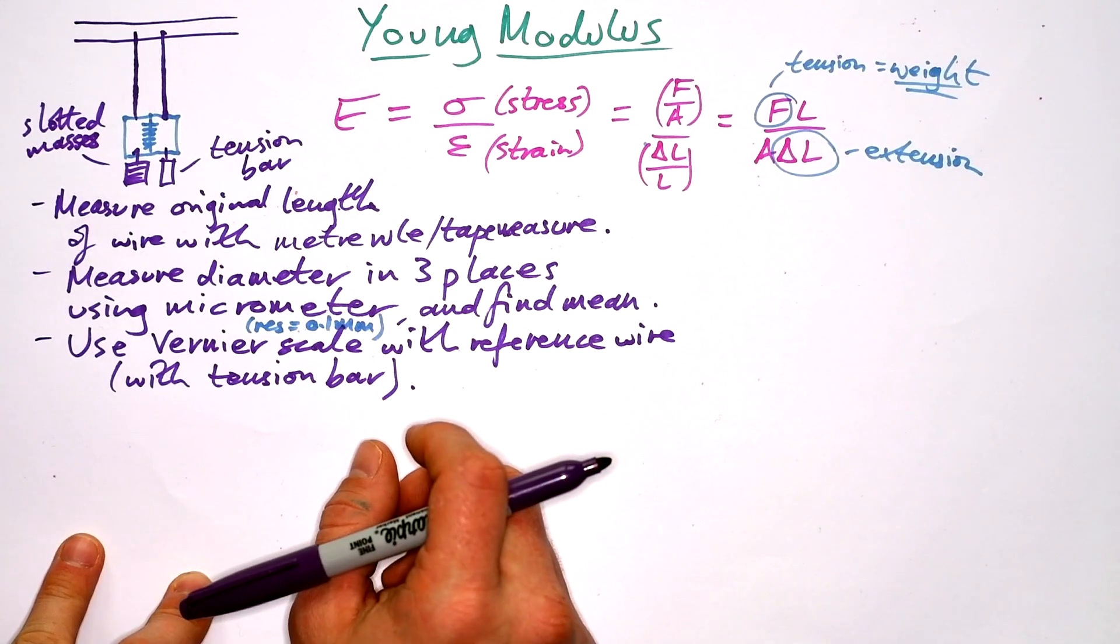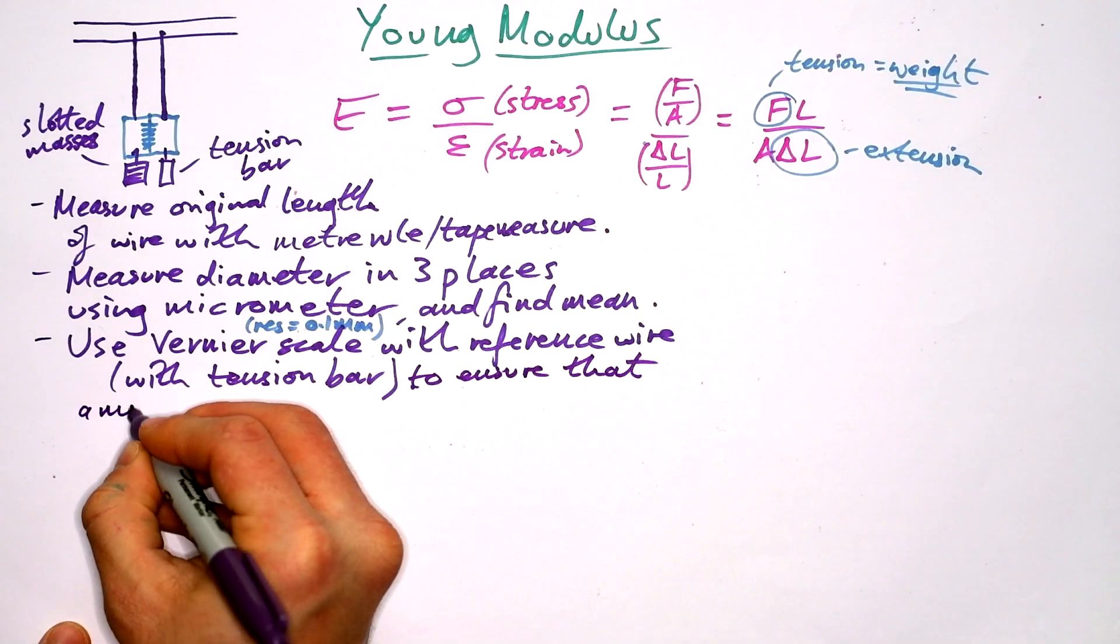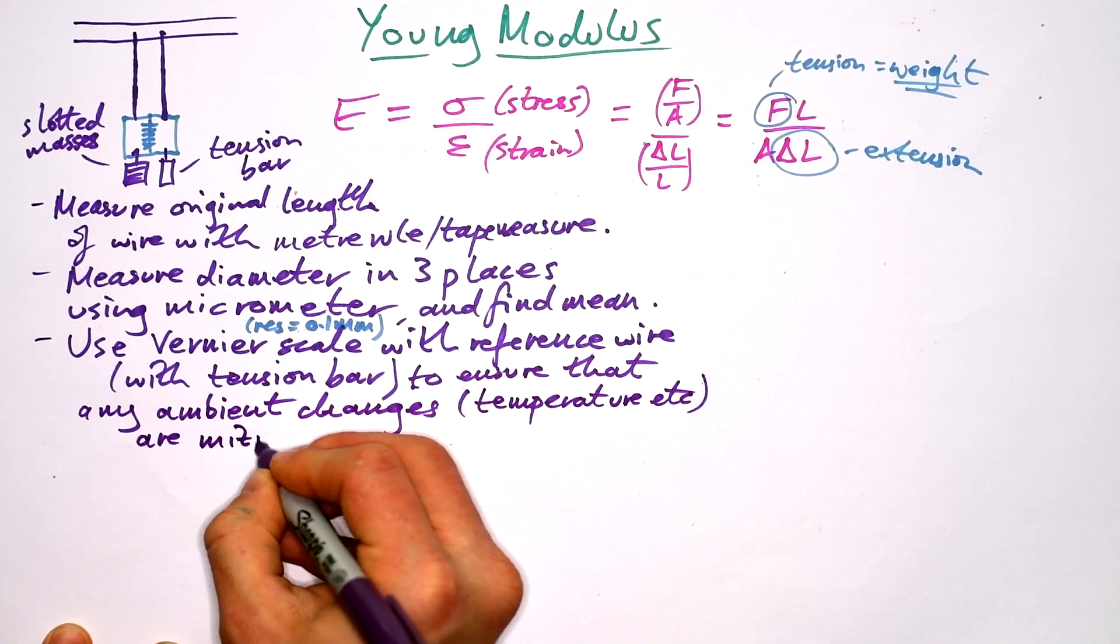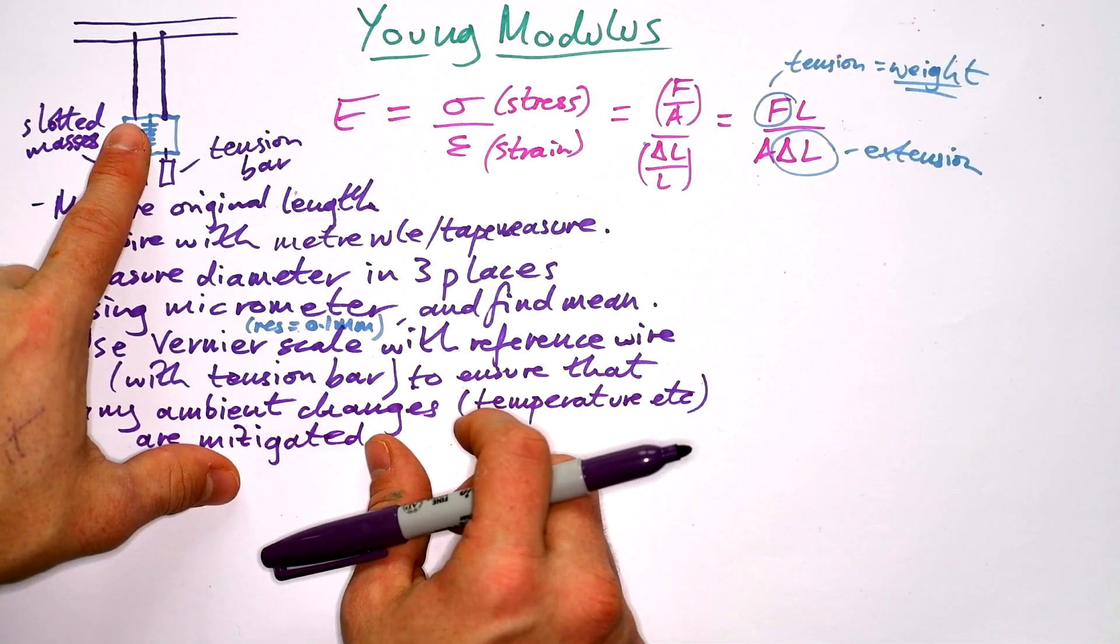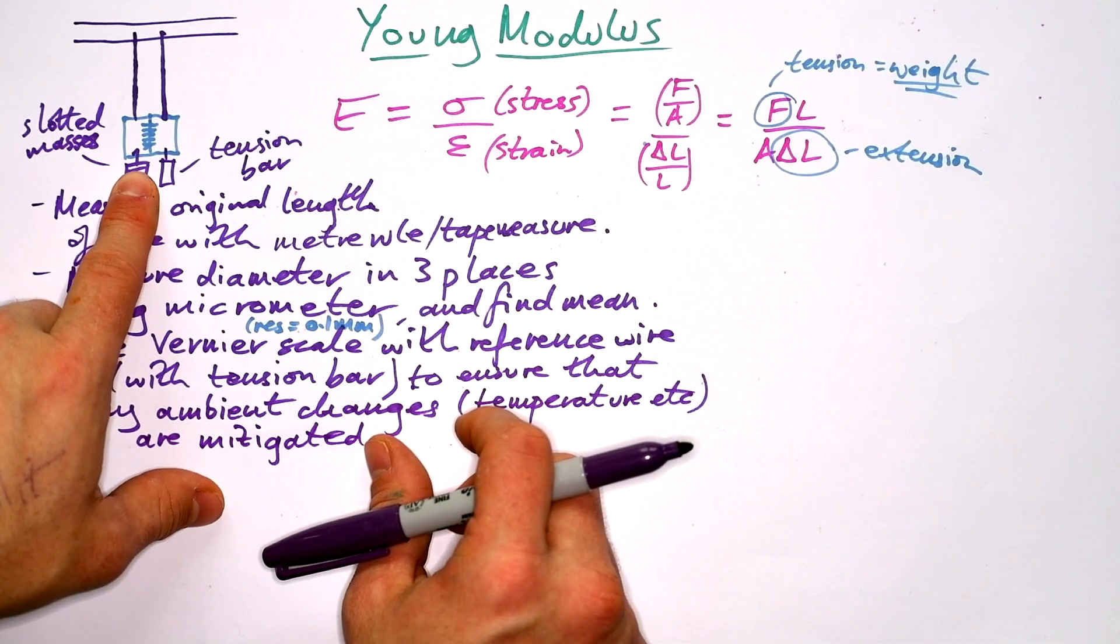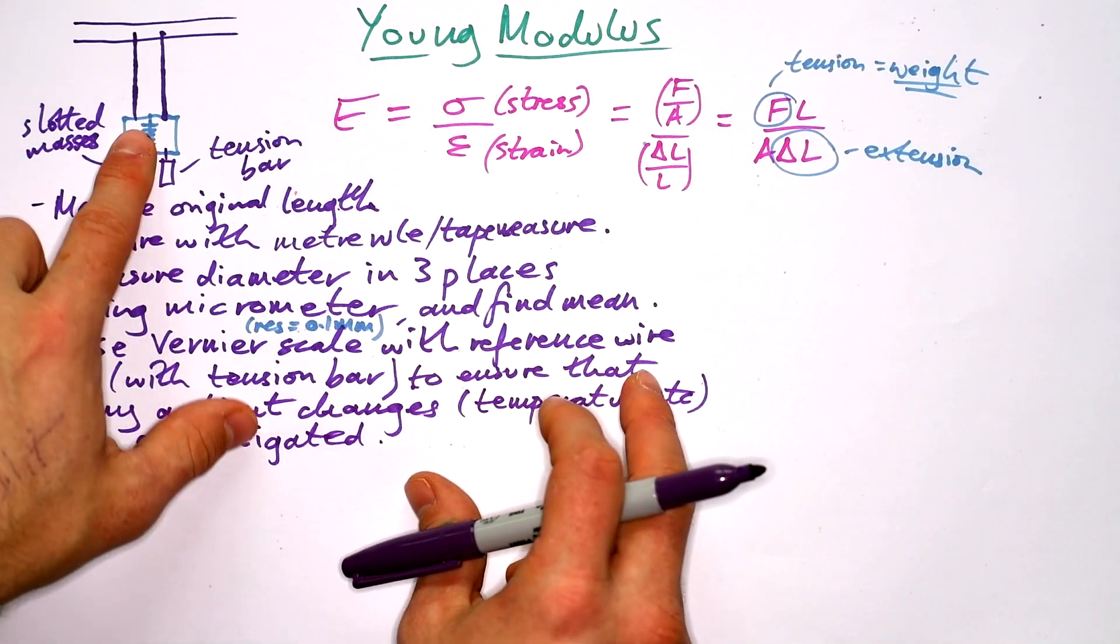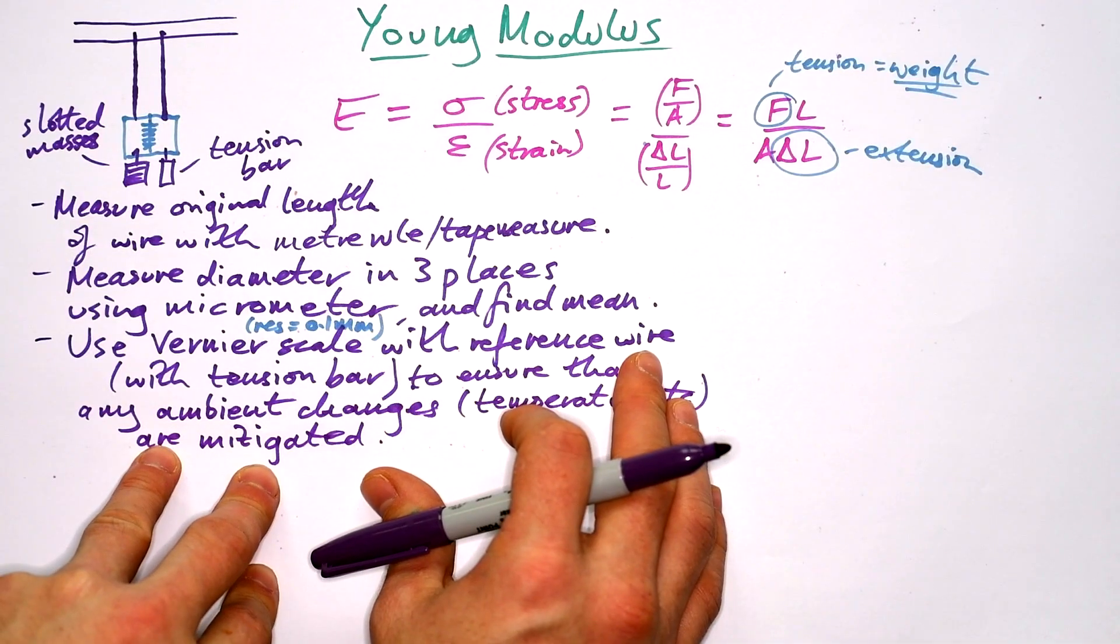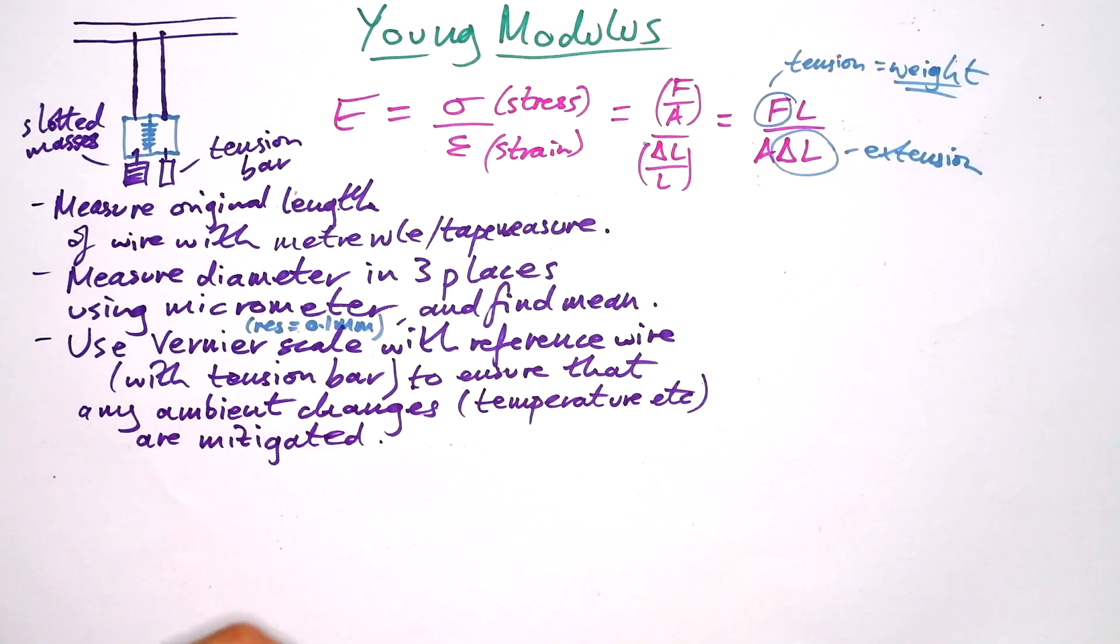So why do we have a reference wire? Why do we need that? Well, it's to ensure that any ambient changes, that is temperature, that kind of thing, are mitigated. In other words, the effect of them is reduced. So if the temperature increased in the room, then that means that your wire would stretch. So the extension would increase even with the same force on it. But by using a reference wire, we're ensuring that both of them stretch just as much. And so even if the temperature increased and the wire stretched, the extension shouldn't change. We only want the extension to change due to the weight.